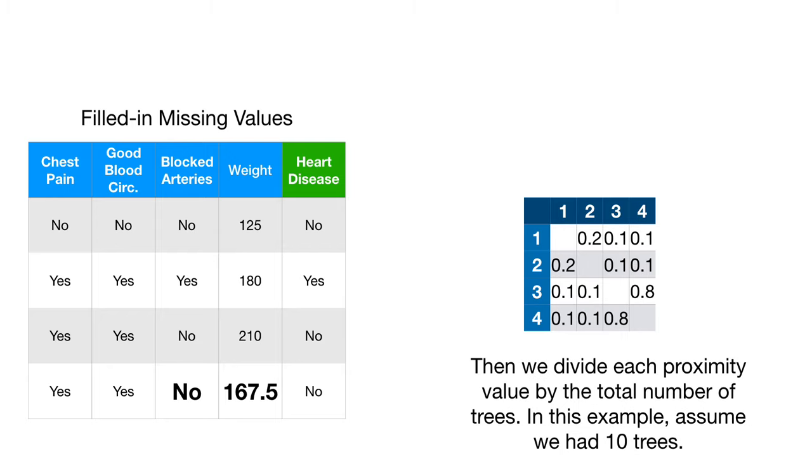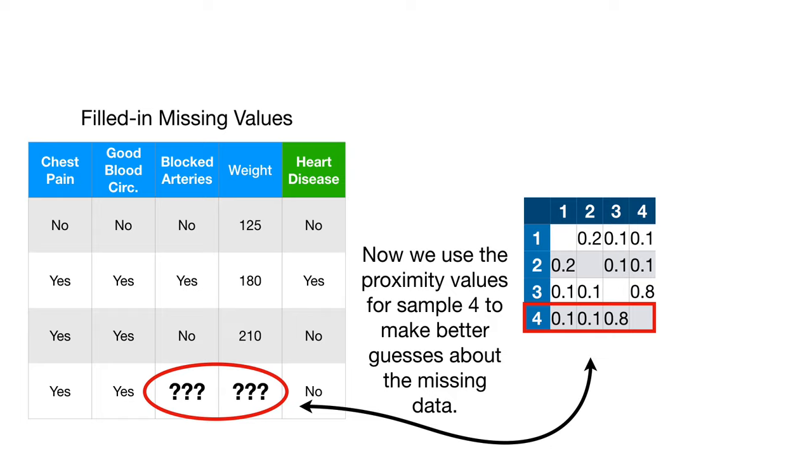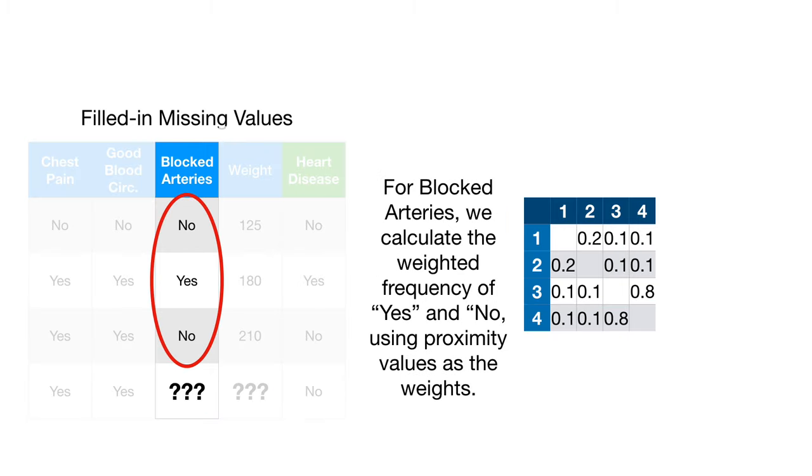We run the data down all the trees and the proximity matrix fills in. Then we divide each proximity value by the total number of trees. In this example, assume we had 10 trees. Now we use the proximity values for sample four to make better guesses about the missing data. For blocked arteries, we calculate the weighted frequency of yes and no using proximity values as the weights.